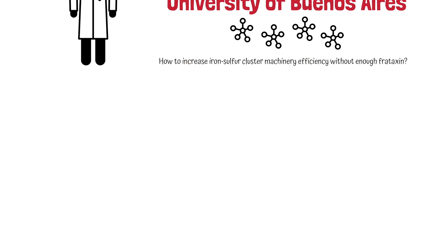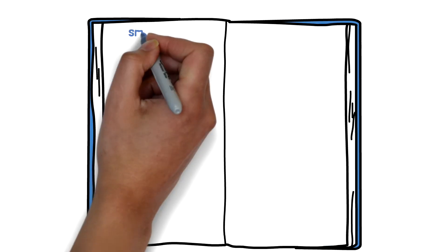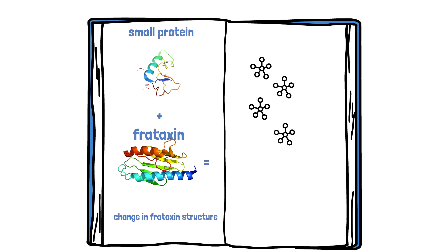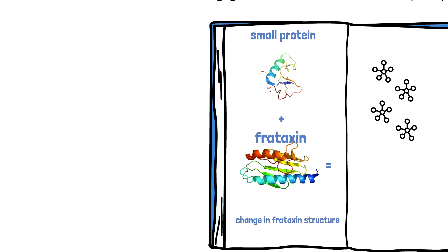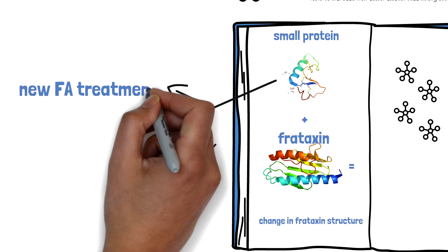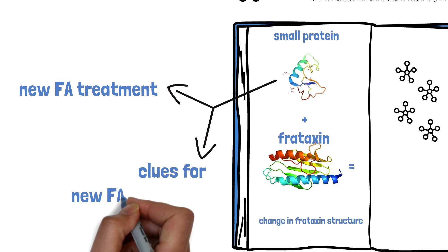Dr. Santos and colleagues have found small proteins that can bind to and change the structure of frataxin and other members of the machinery that builds iron-sulfur complexes. This toolkit of proteins allows the team to investigate how changing the structure of frataxin and other members of machinery can improve the performance of the machinery to produce iron-sulfur complexes more efficiently overall. These small proteins that bind to frataxin might someday be the treatment themselves or they may provide clues to other therapeutic approaches.